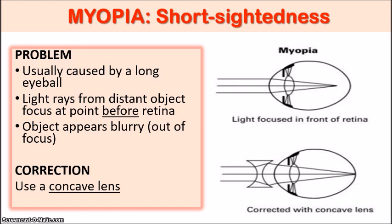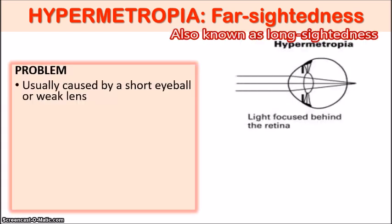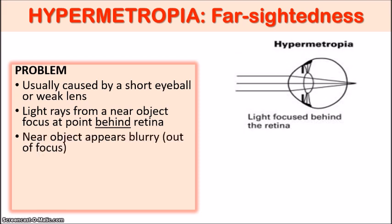So that is myopia. Now on the other hand, the other condition: hypermetropia, or farsightedness. The problem here is that we have a short eyeball or a weaker lens. The issue is that the light rays coming from near objects focus at a point behind the retina. So instead of in front, the light rays are focusing behind the retina. Consequently, any near objects viewed are going to appear blurry and out of focus. That is the problem with farsightedness.